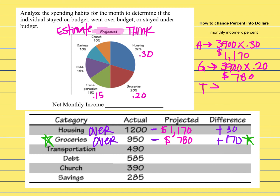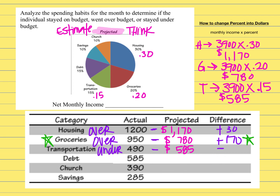The last one is transportation. Monthly budget $3,900 times 0.15 equals $585 projected. They thought they would spend $585, but this time they went under budget. Subtracting the actual from the projected gives a negative amount because they spent less than expected — negative $95. So that's pretty good.